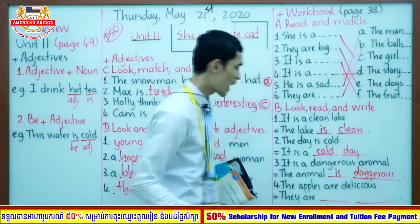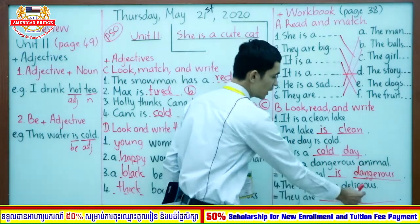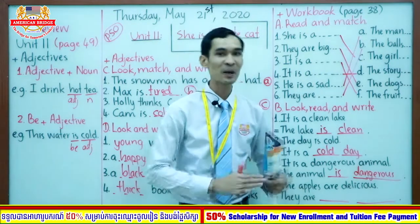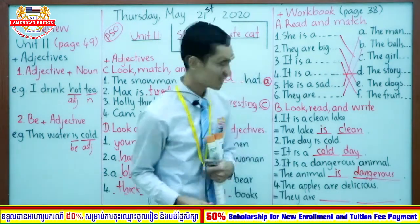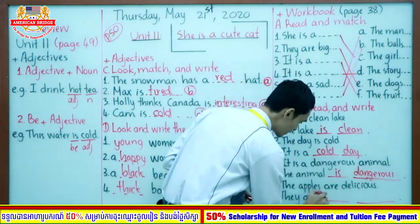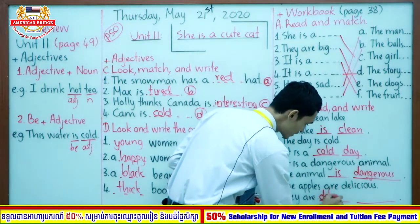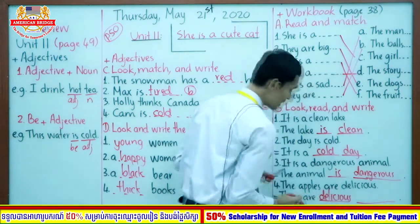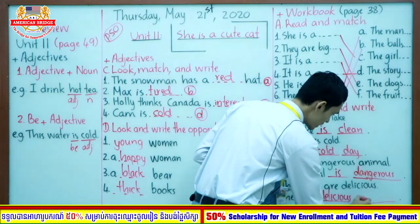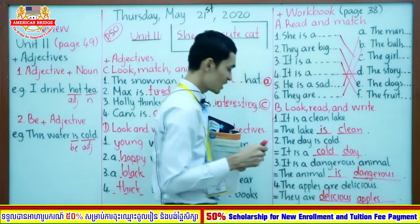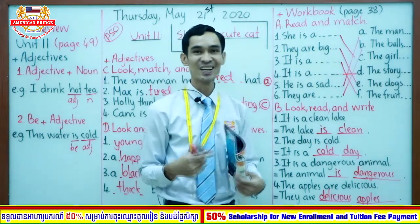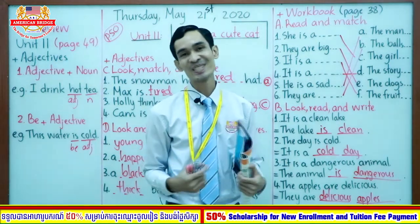How about number four? The apples are delicious — be plus attitude. So you need to make it attitude plus noun. Delicious is attitude, apples is noun: they are delicious apples. Do you like apples? So do I — I like apples a lot.